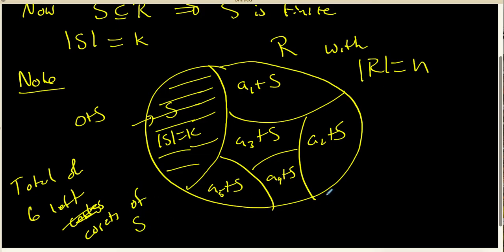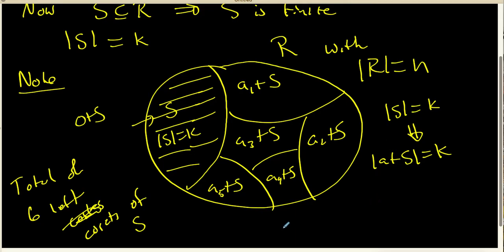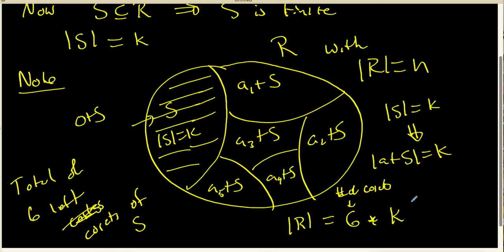In this particular schematic, we know that each one of these cosets has exactly the same number of elements as the subring — they all have K elements. It's clear that the number of things inside the ring would have to be the number of cosets times the size of the subring. The question is whether or not this fact holds in general.